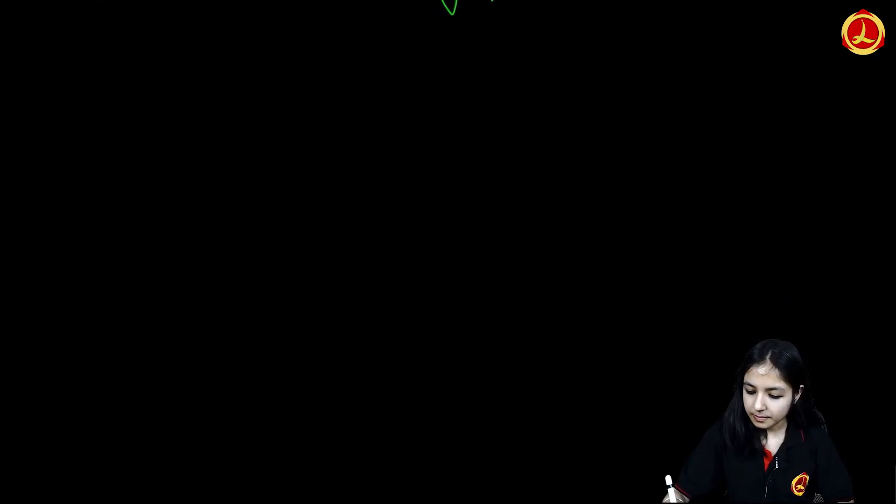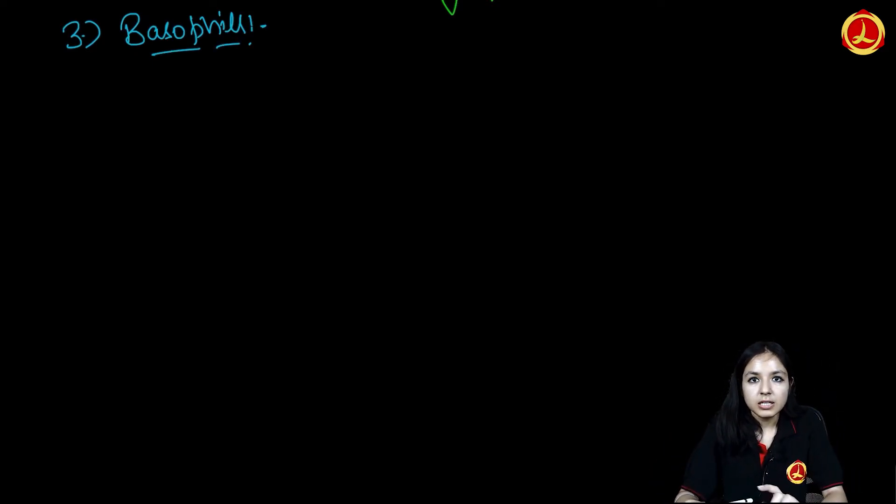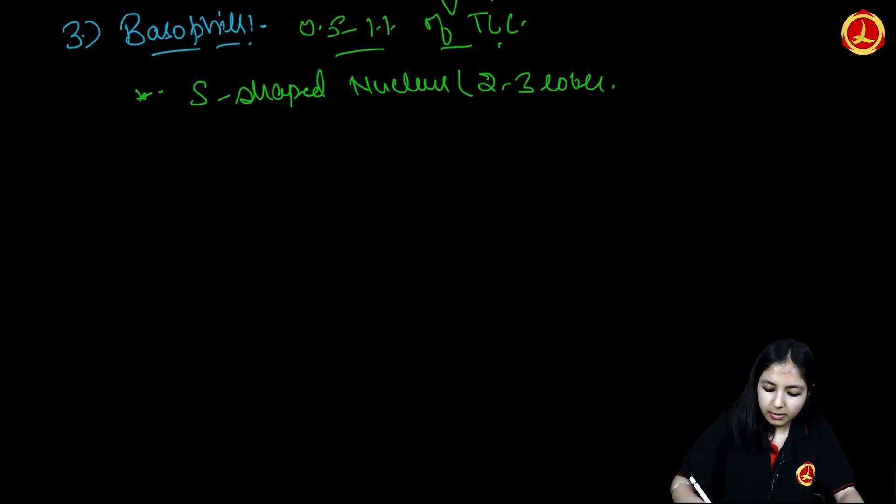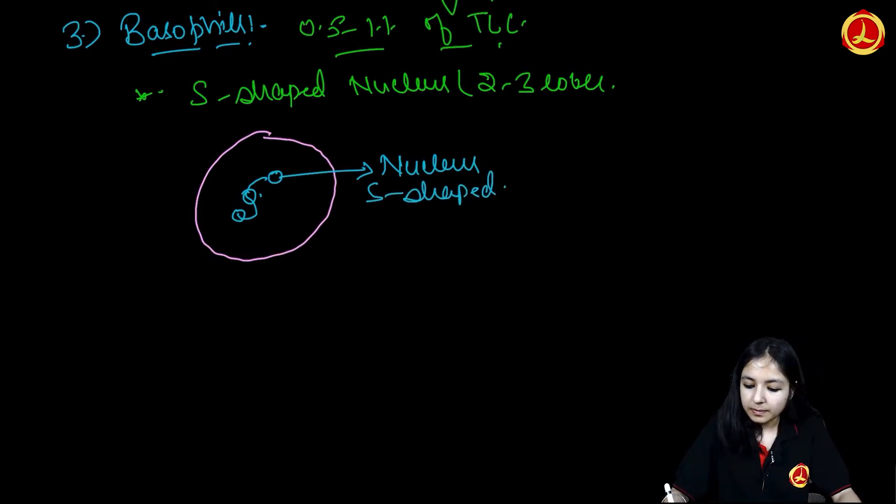Now we will be talking about basophils. Basophils are the type of WBCs we have studied. These are types of granulocytes. But these are the cells which are present in the least amount in our body for about 0.5 to 1% of total leukocyte count. And they have an S-shaped nucleus, 2 to 3 lobes. Nucleus which is S-shaped. And it is also granulocyte, so it will have granules in its cytoplasm.